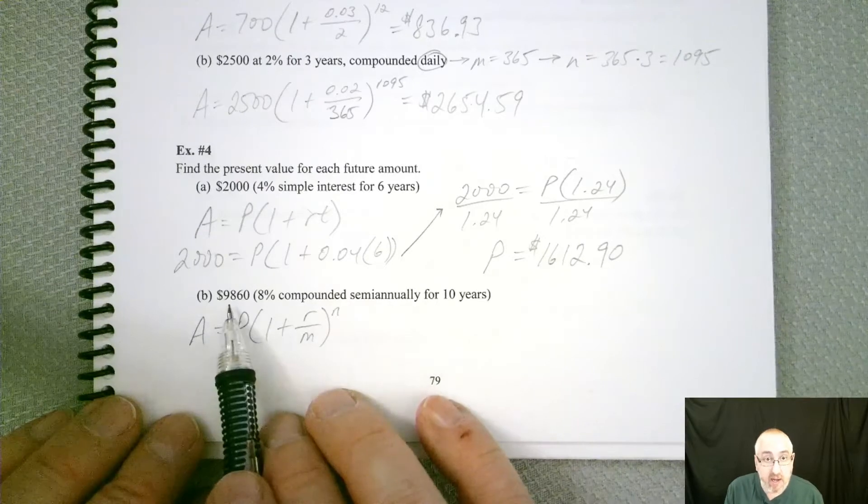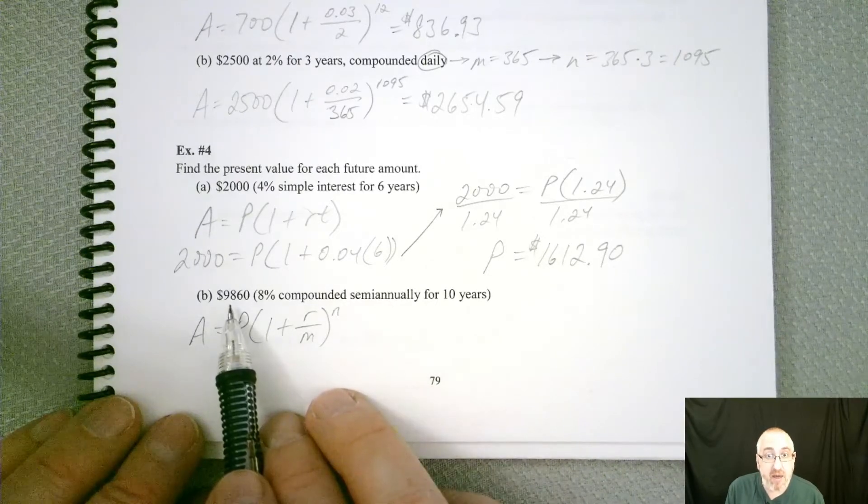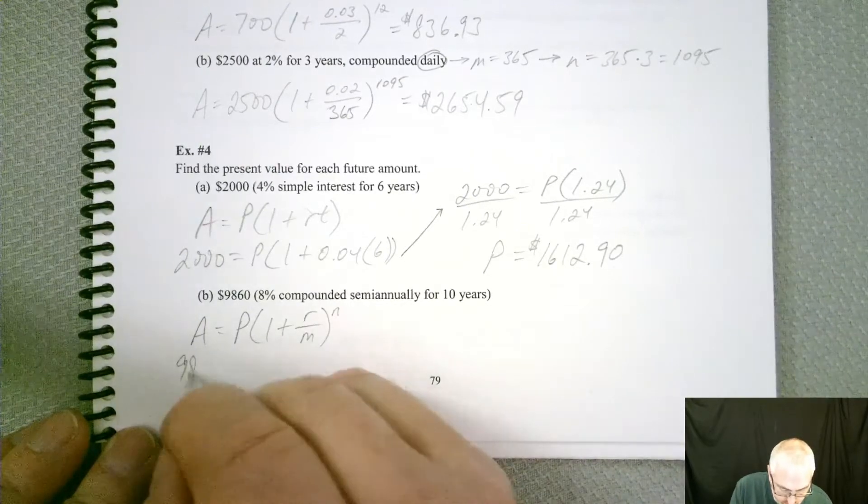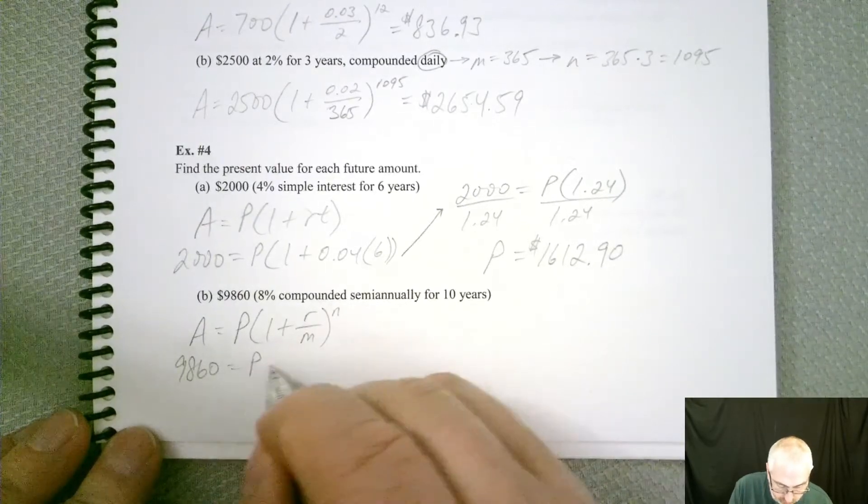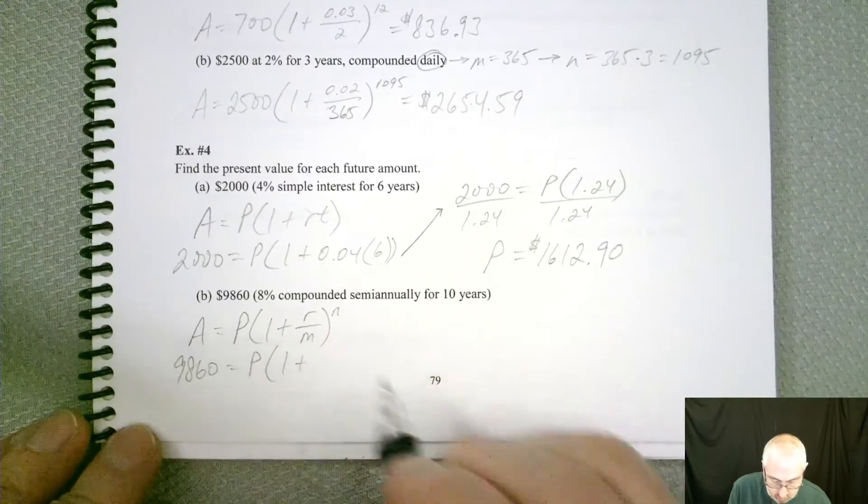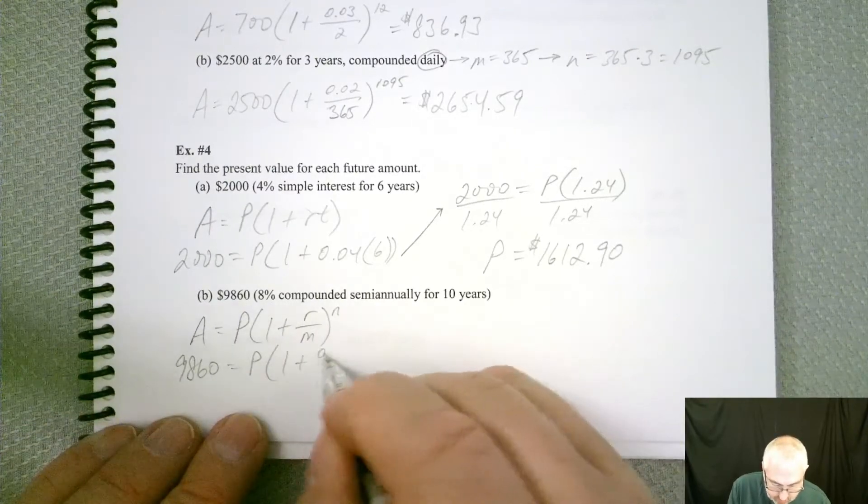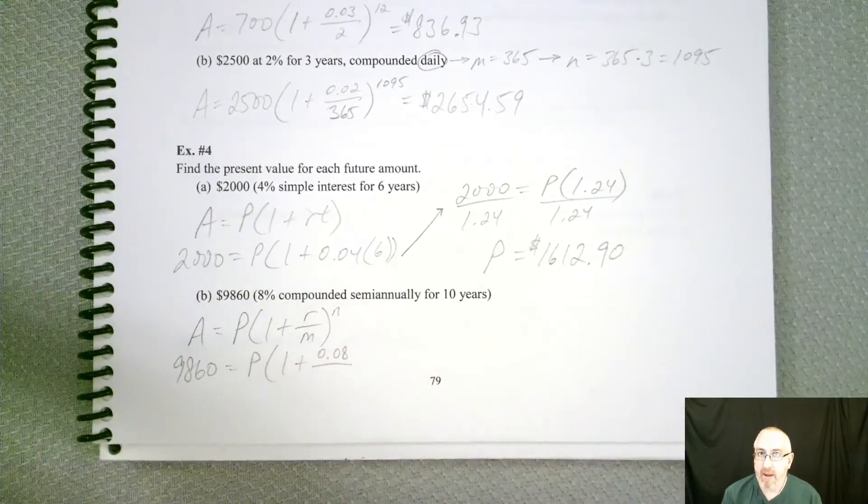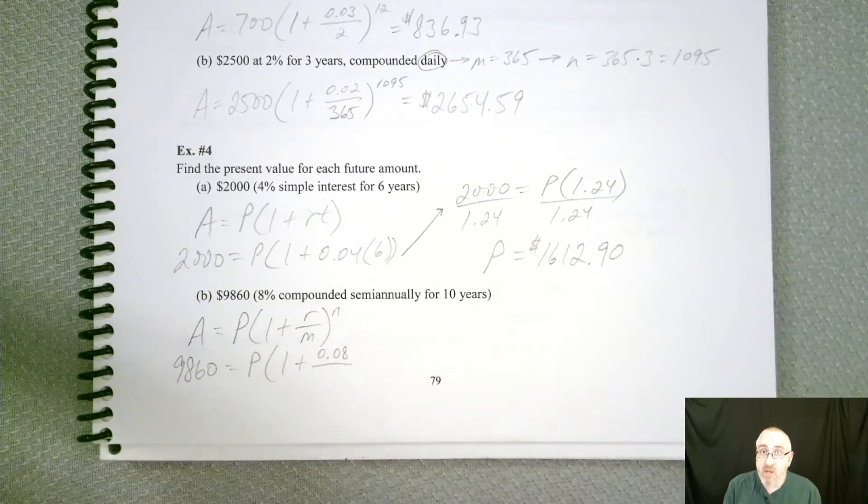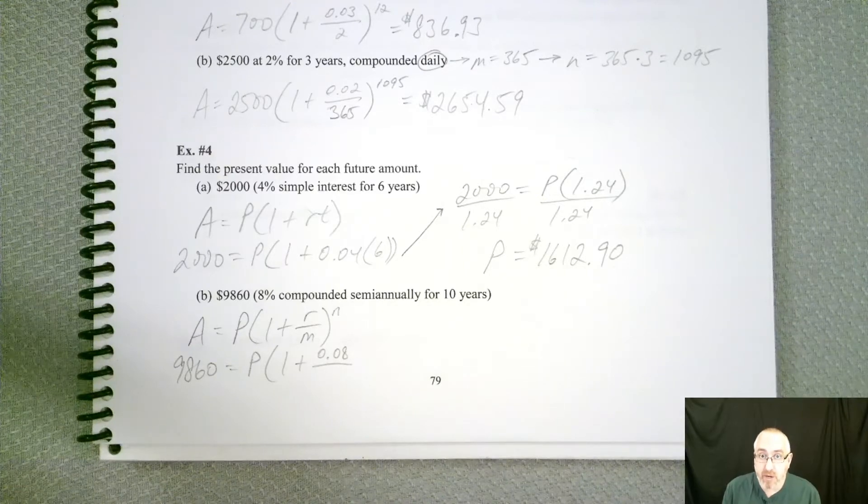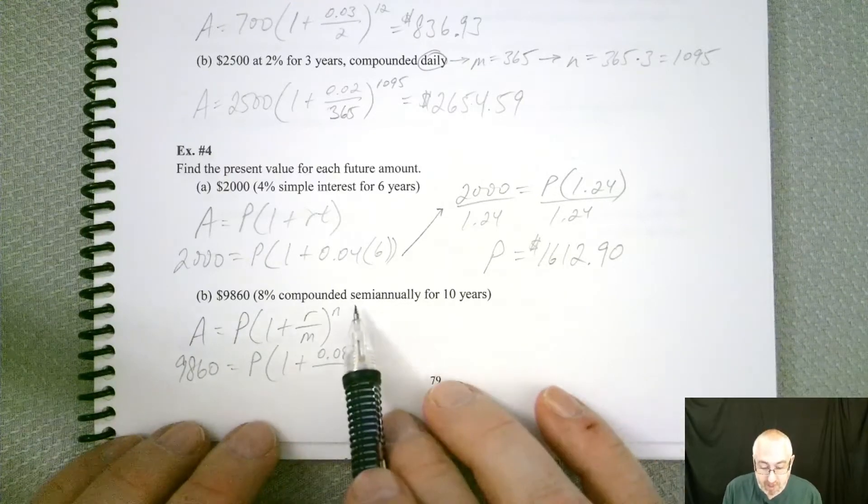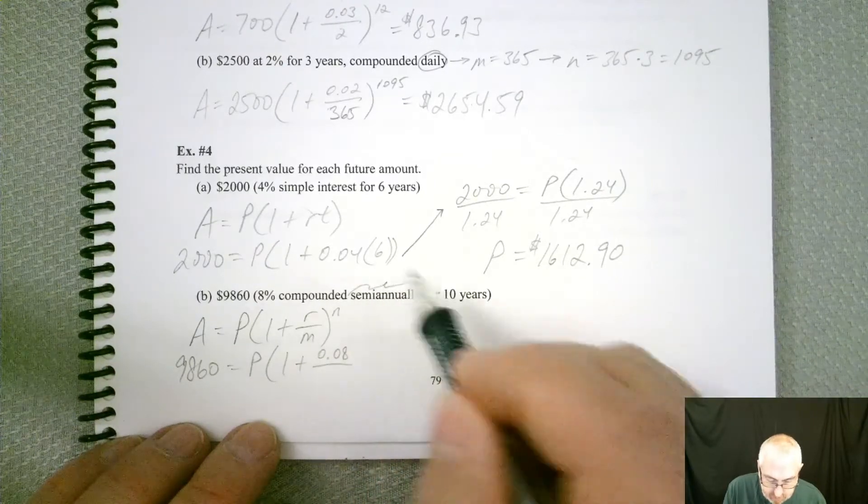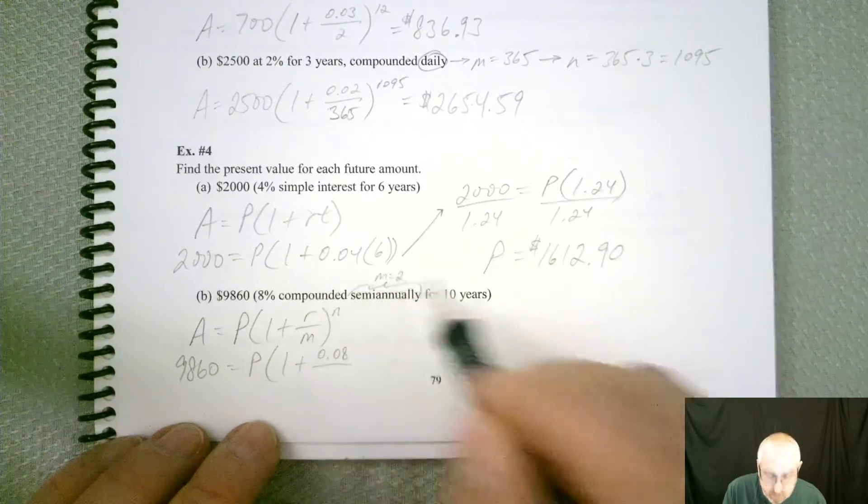Now the $9,860, that is our future. So again, that replaces A. We don't know what P is. R is 8%, so 0.08. m, what's m? So remember, m is always the number of compoundings per year. So if it's compounded semi-annually, that means that m equals 2.